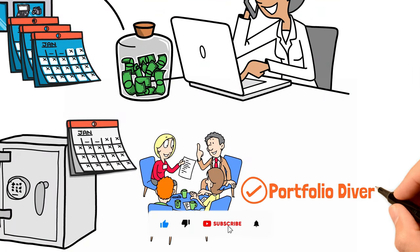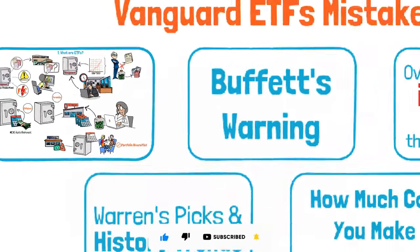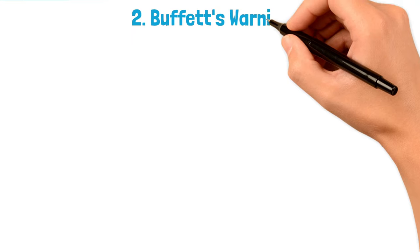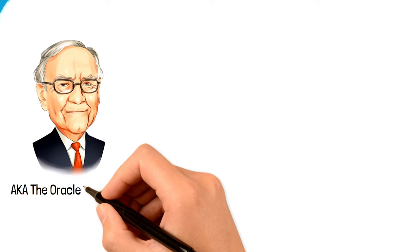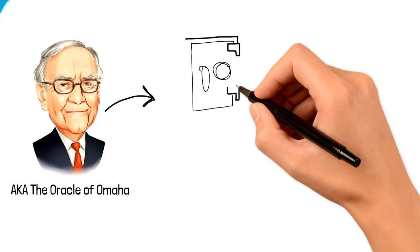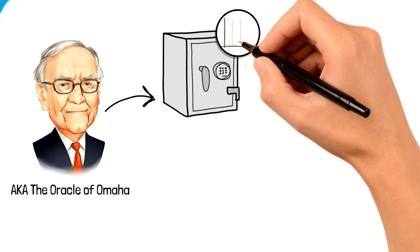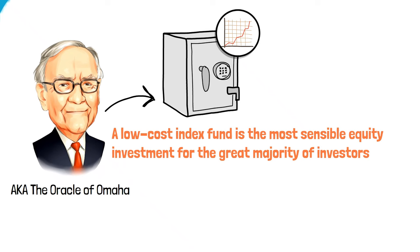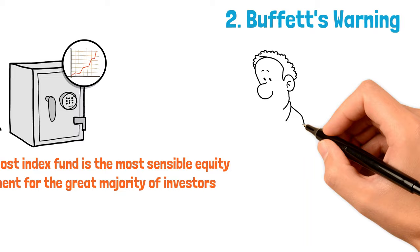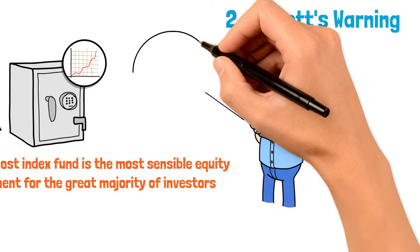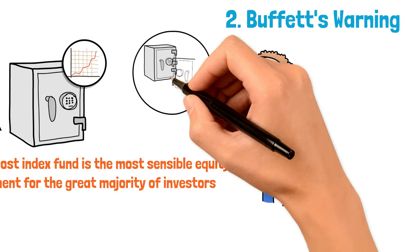When it comes to investing, Warren Buffett, also known as the Oracle of Omaha, likes to keep things simple and effective. He's a big fan of index funds, famously saying a low-cost index fund is the most sensible equity investment for the great majority of investors. This piece of advice is pure gold, especially in today's world where we're bombarded with endless ETF options.